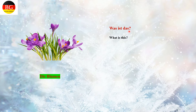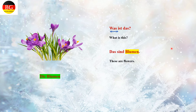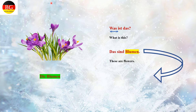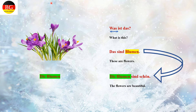Let's see one more example for plural with the bestimmter Artikel. 'Was ist das?' — 'Was' is the WH word meaning 'what', used for things or objects. Die Blumen. 'Die' is the plural bestimmter Artikel. Das sind Blumen — there is no unbestimmter Artikel for the plural; 'sind' and the noun ending represent the plural form. These are flowers. In order to give more detail: 'Die Blumen sind schön' — the flowers are beautiful — using the bestimmter Artikel.